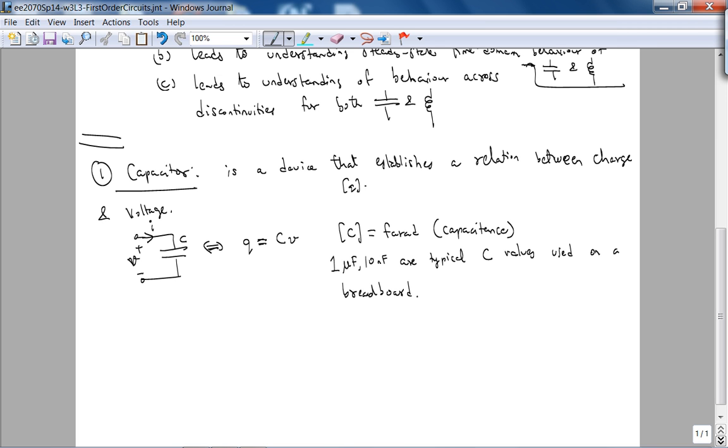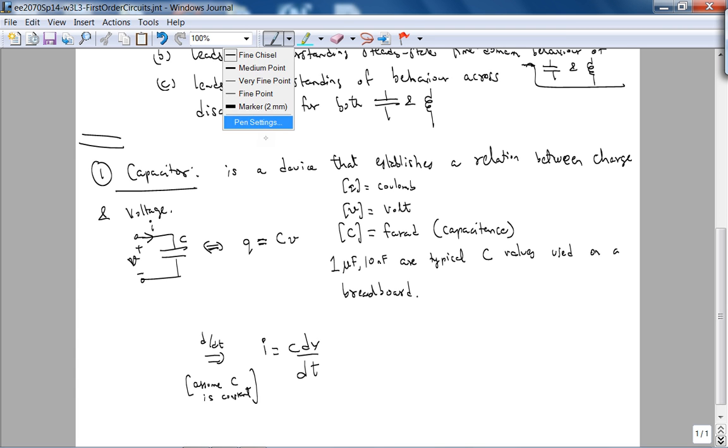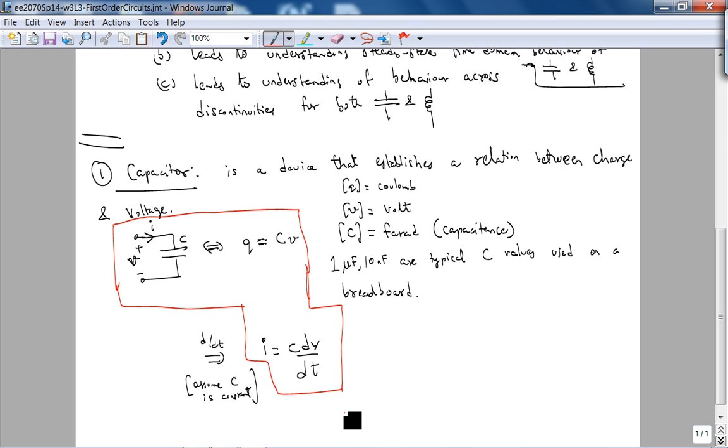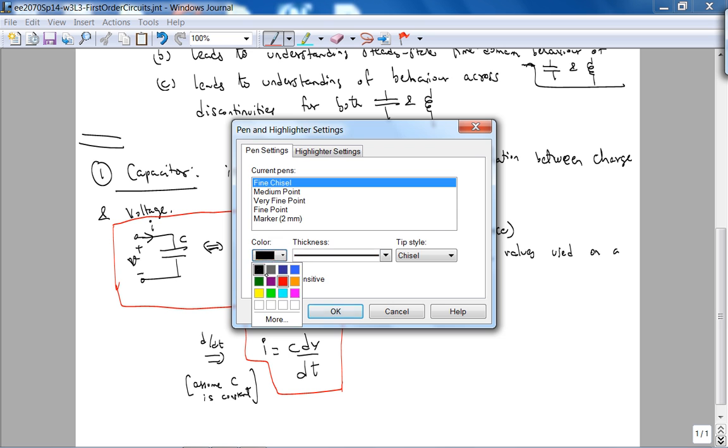But for us, Q is defined as C times V. We use lowercase V and uppercase C. The unit of C is the Farad. And this is called Capacitance. Microfarad, nanofarads, are typical C. One microfarad, 10 nanofarads are typical C values used on a breadboard. The point is, a Farad is a pretty large capacitor. But you can have super caps from companies like EMC squared. But for us, Q is simply CV. And of course, the unit of Q is the Coulomb. And the unit of V is the Volt. But from here, if you take the derivative with respect to time and assume C is constant, we get I equals C dV/dt by the product rule.